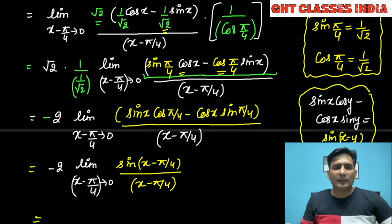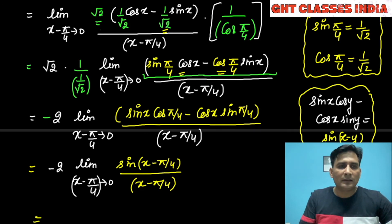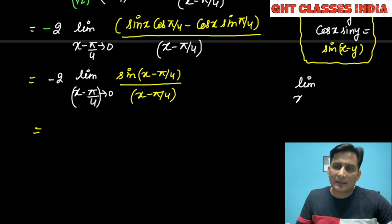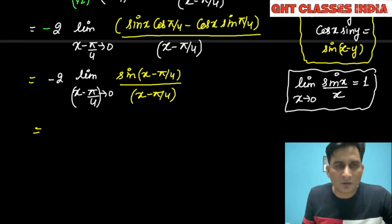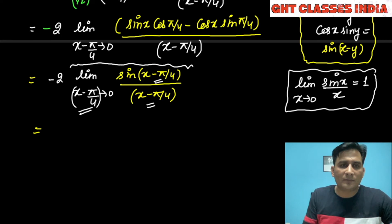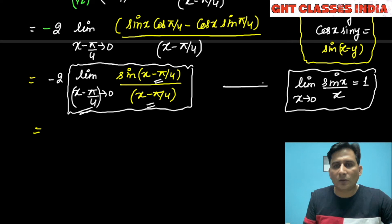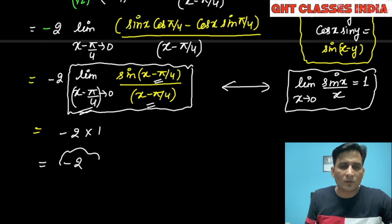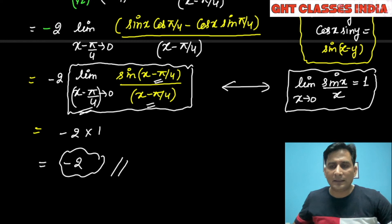Now we use the standard limit formula: limit x tends to 0 of sin x upon x equals 1. Here, the expression is sin(x minus pi by 4) upon x minus pi by 4, so this entire term equals 1 according to that identity. Therefore, the answer is minus 2 into 1, which equals minus 2. So minus 2 is the final answer. I hope this question is clear to you. Thank you.